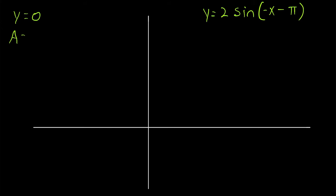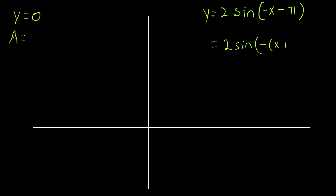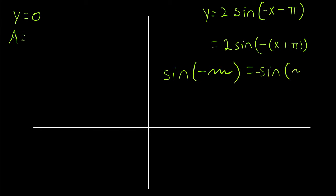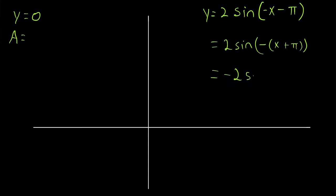We want to change how things are written without changing the function so that x has a positive coefficient. We need to do that at this step because that will affect the amplitude in a sine function. Inside the sine function, we'll factor out a negative one, leaving us with negative one times x plus pi. Next, we remember that sine is an odd function, meaning sine of negative stuff equals negative sine of that stuff. So we can bring the negative one outside of the sine function, giving us negative two sine of x plus pi.